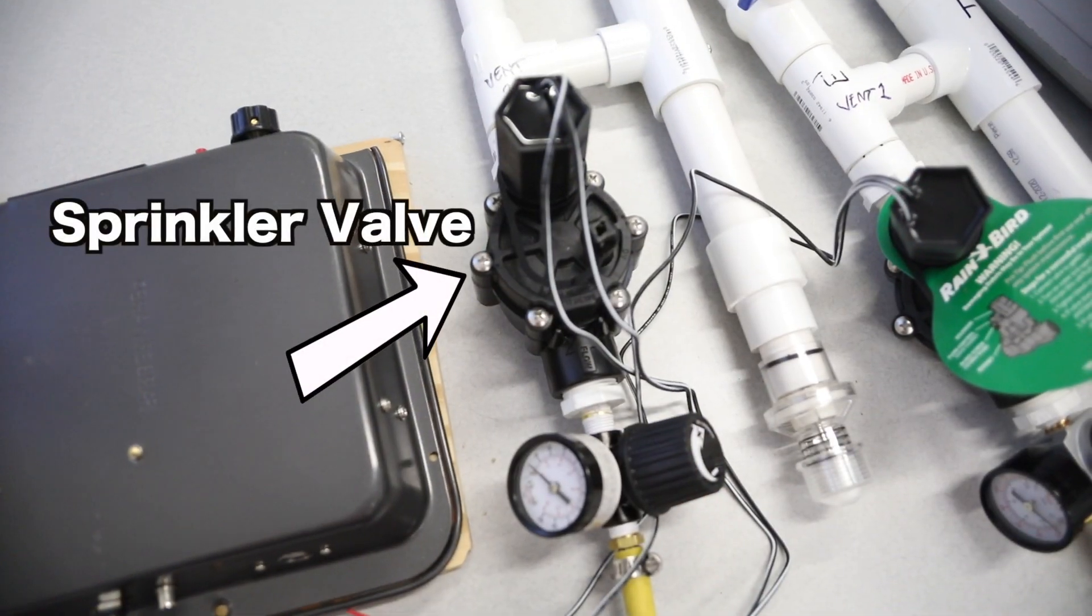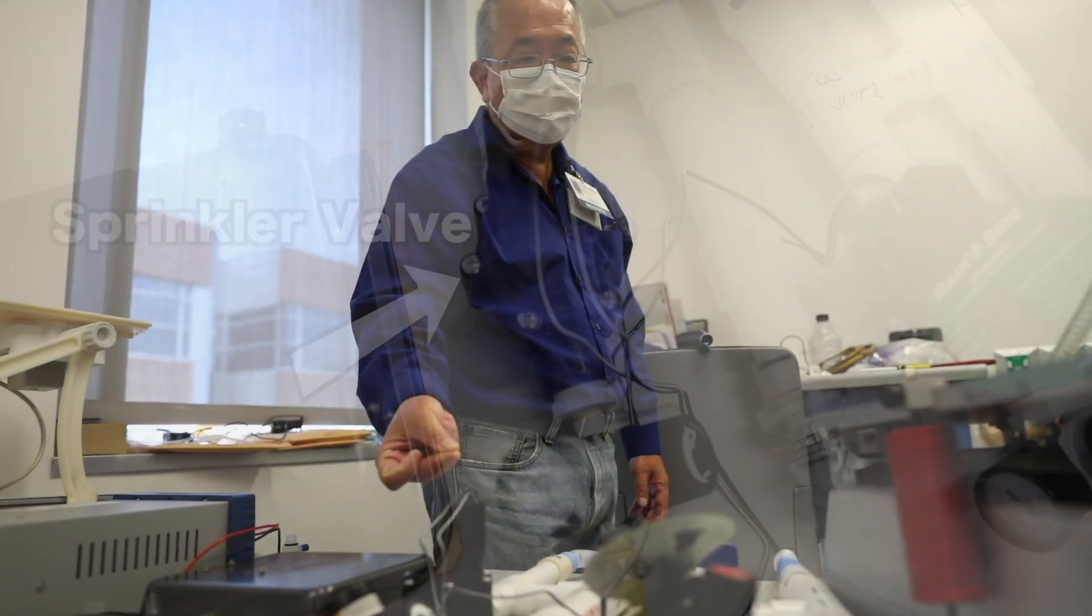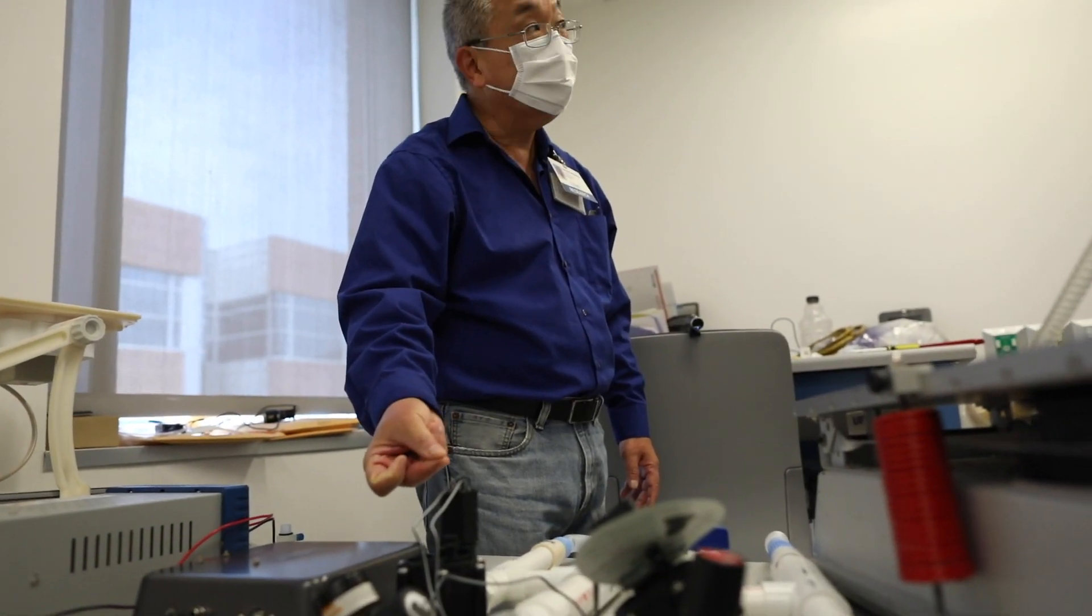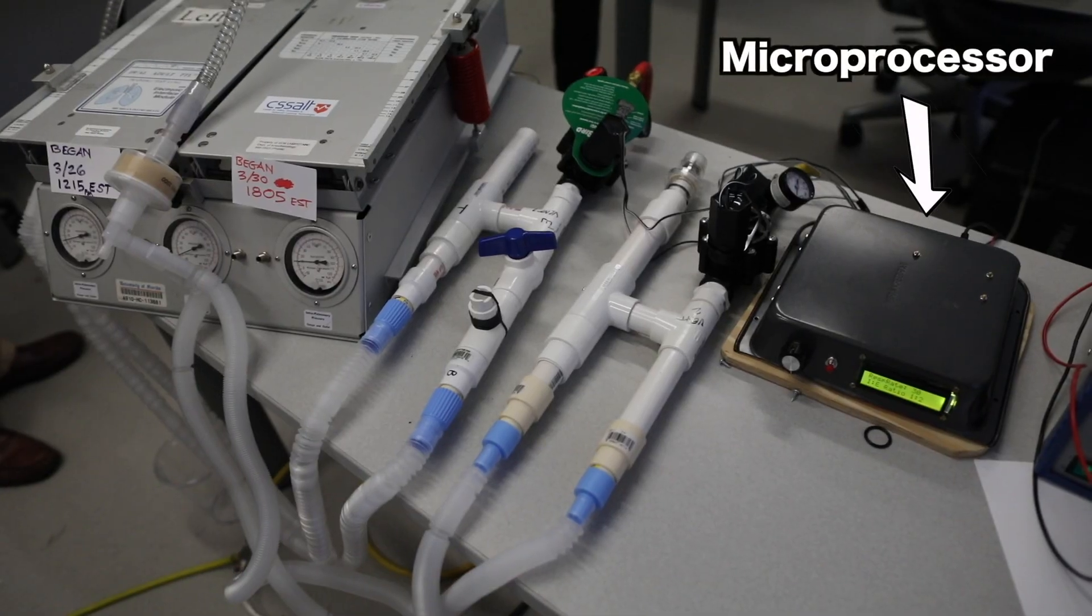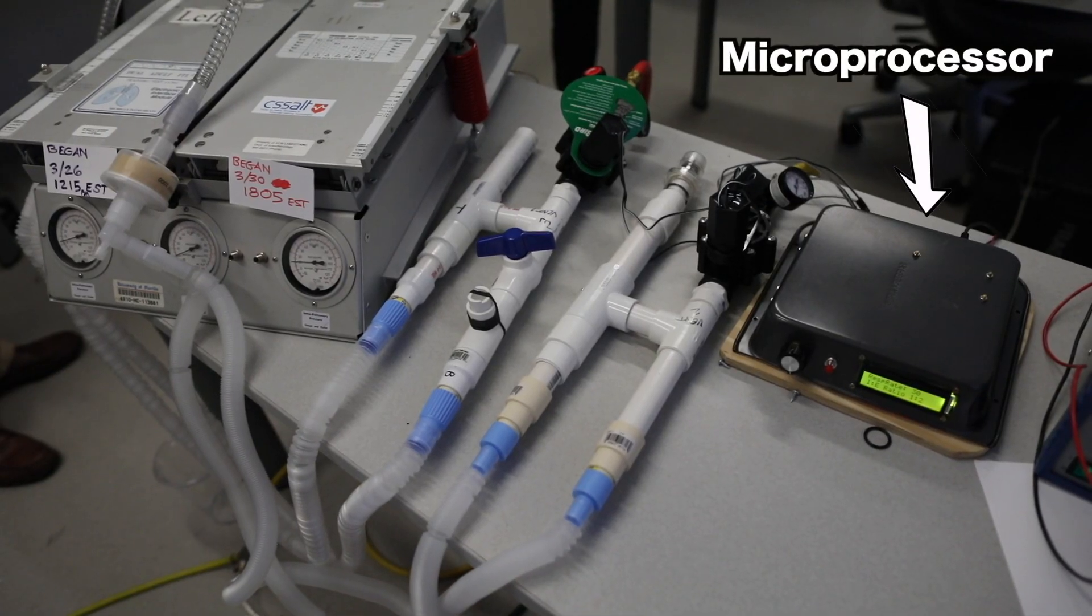Then after it's reduced it goes through the rainbird valve. The rainbird valve is opening, closing, opening, closing. And the timing is based on this. And both are opening and closing at the same time because they're sharing the controller.